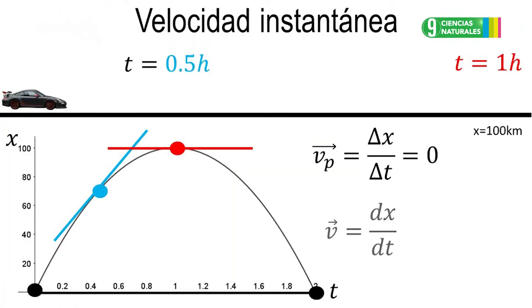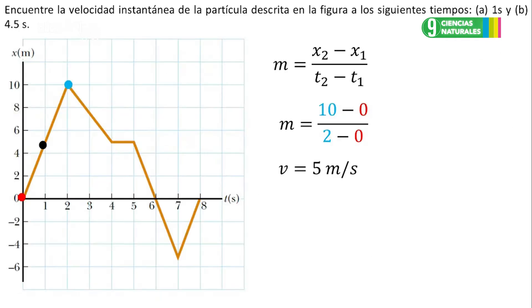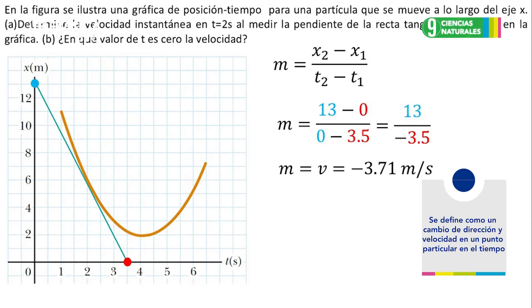La velocidad instantánea es un método para determinar la rapidez con que un objeto está cambiando su velocidad o dirección en un momento dado. Se determina reduciendo el periodo de tiempo usado para medir la aceleración a una cantidad tan pequeña que el objeto no se acelera durante el periodo de tiempo dado. Este método es útil para producir gráficos que miden una serie de cambios en la velocidad, y se define como un cambio de dirección y velocidad en un punto particular en el tiempo.